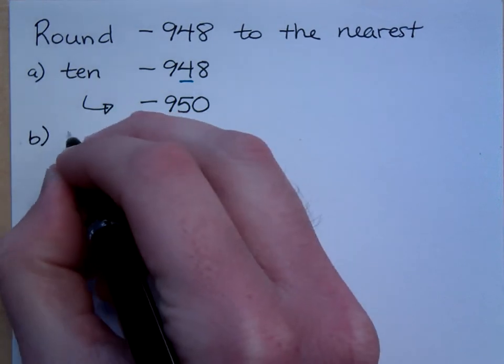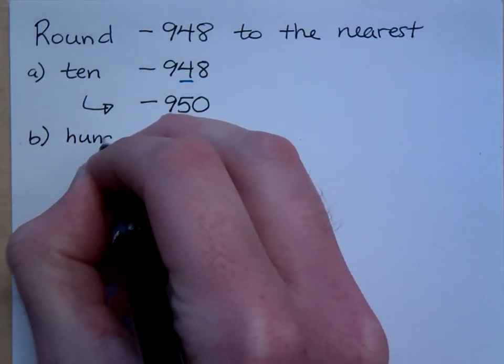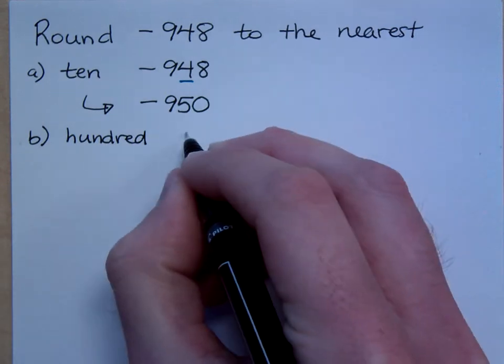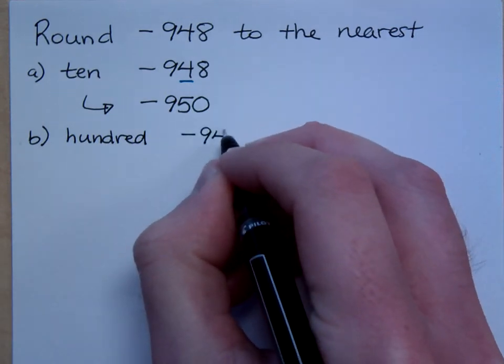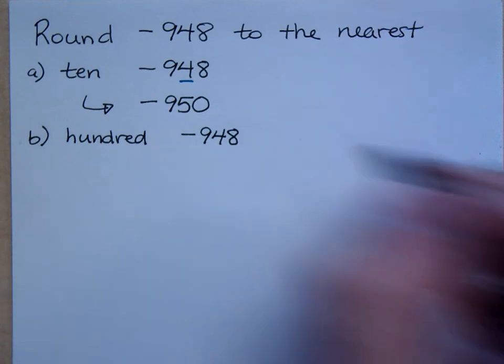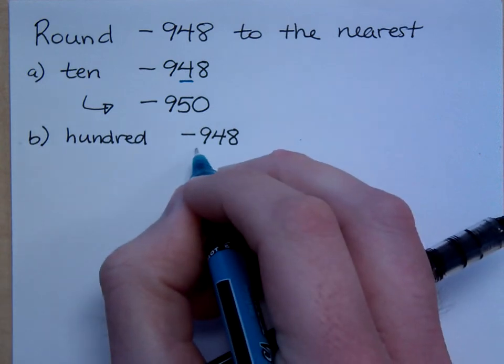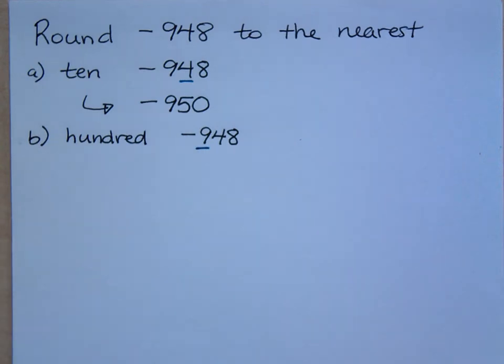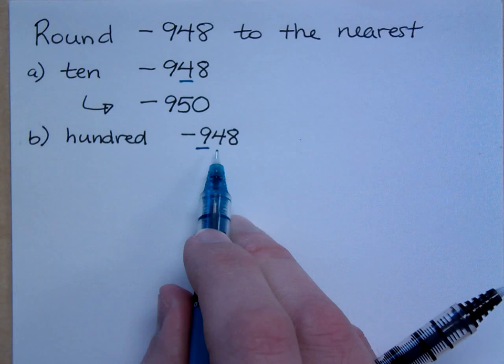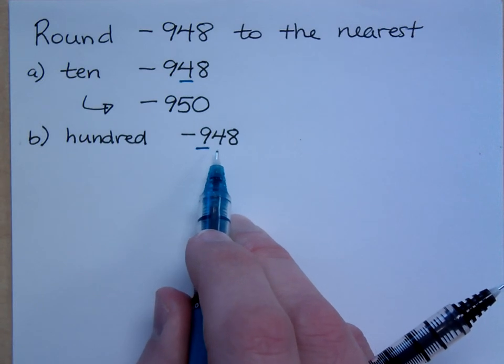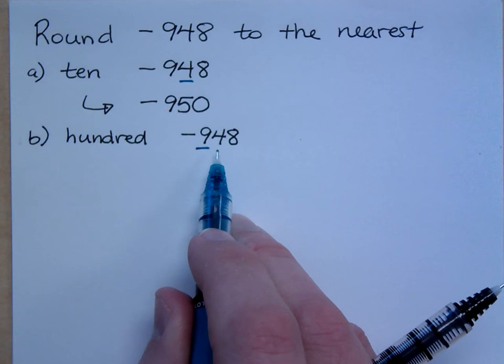What if I round this to the nearest 100? I want to round negative 948 to the nearest 100. So where's my 100 spot? The 100 spot is the 9, so I look immediately to the right of that, and I see a 4. Is that a number that I'm going to round up or round down? Round down.